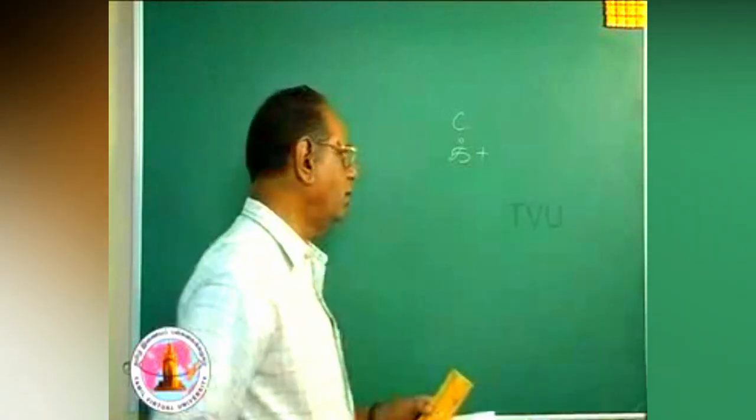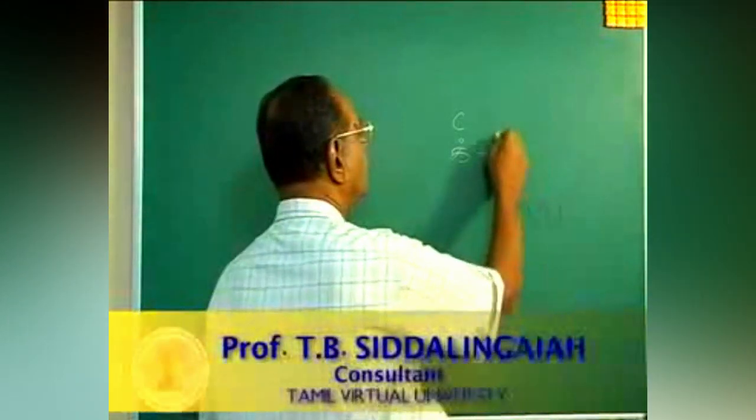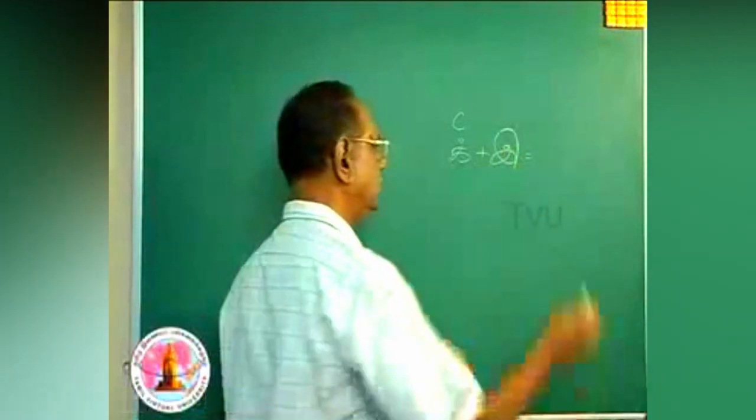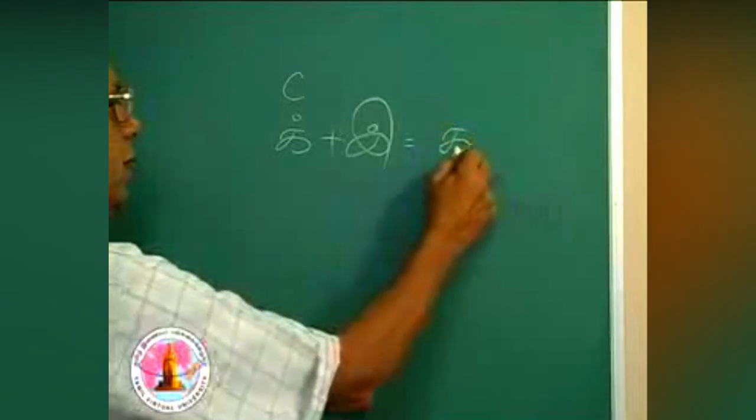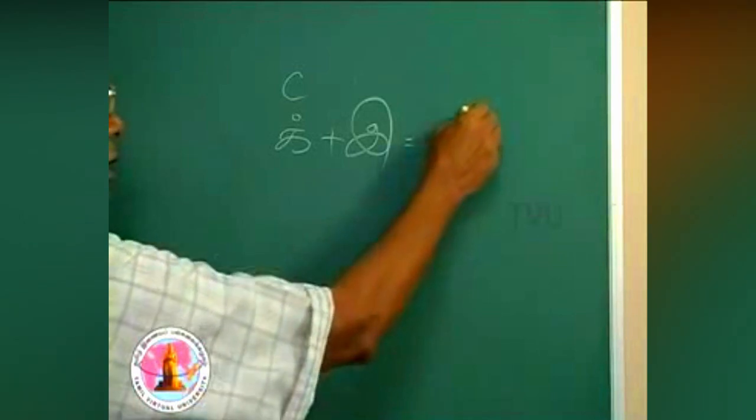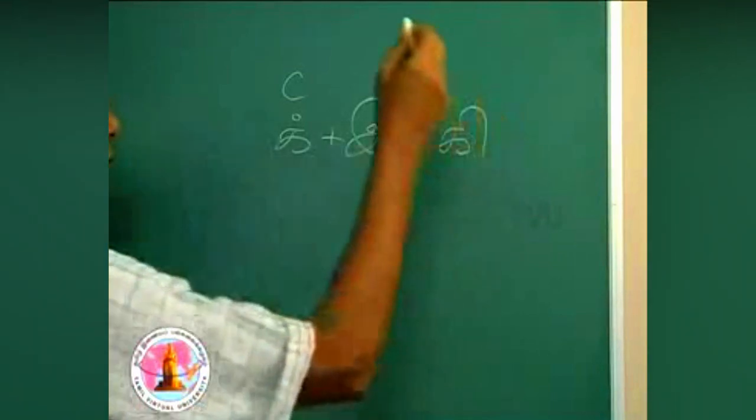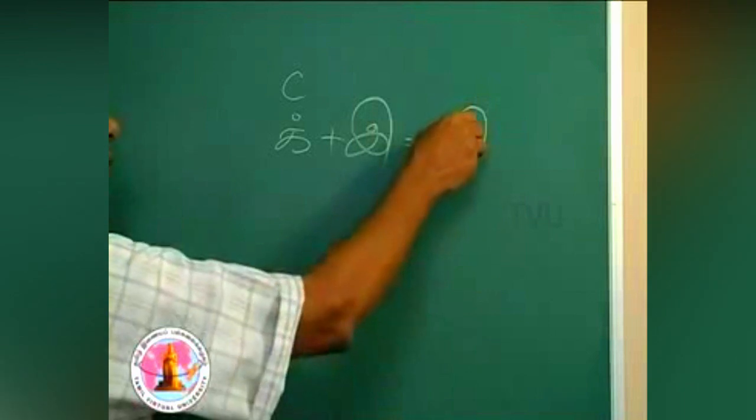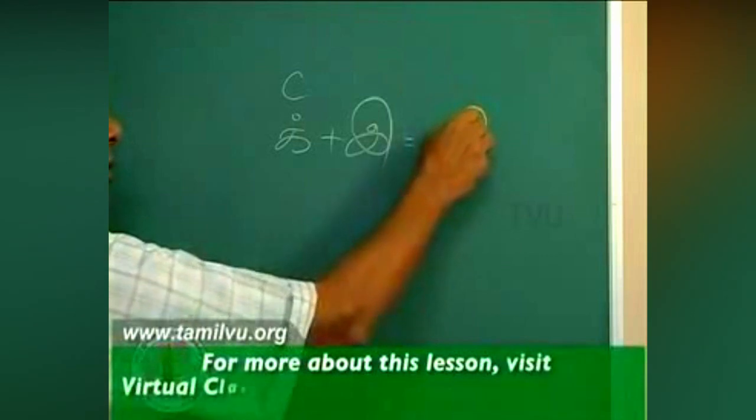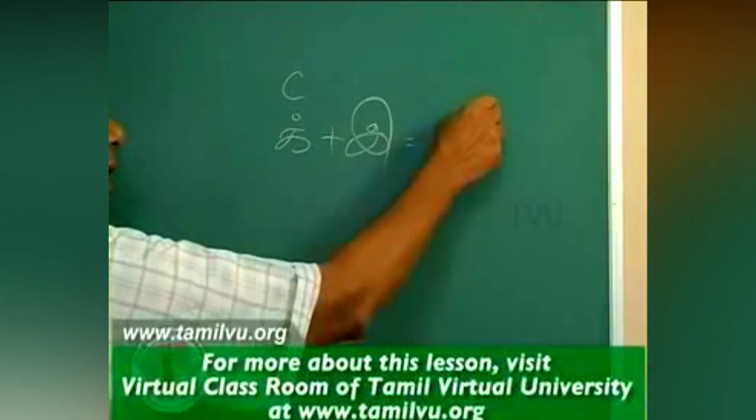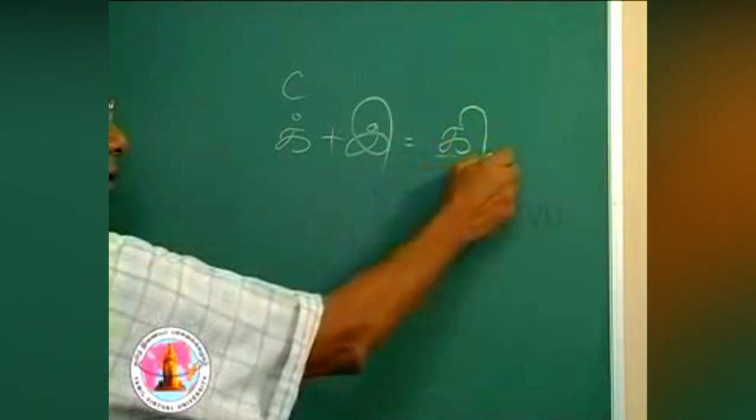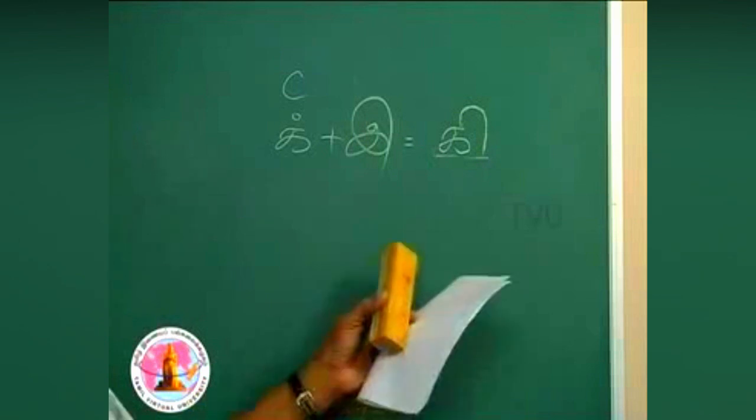Another vowel, the third vowel, i. So what will be the combination? Combination is ki. How do we write it? This is ka as you know, and you put a curve at the end of the right side. From the right end you elongate the line, make a curve, bring it down and end it equally along the letter. So this is ki.